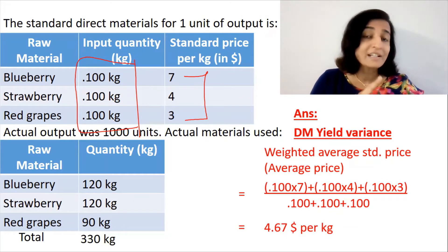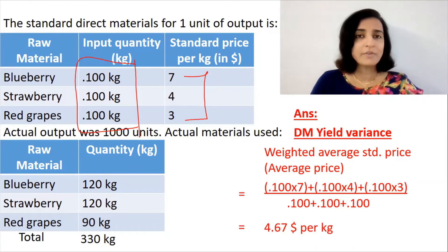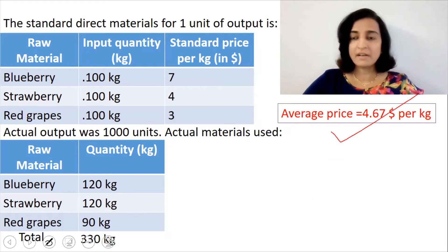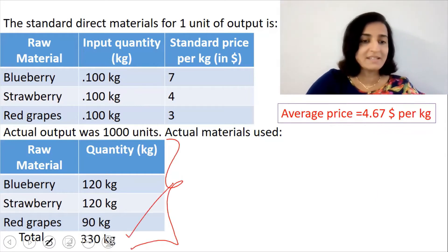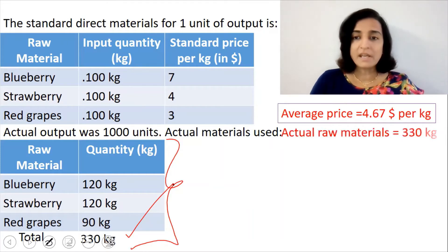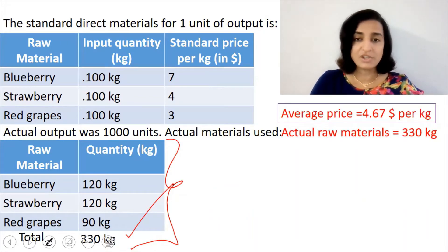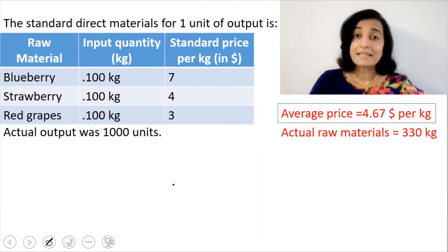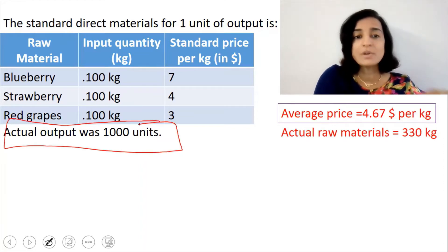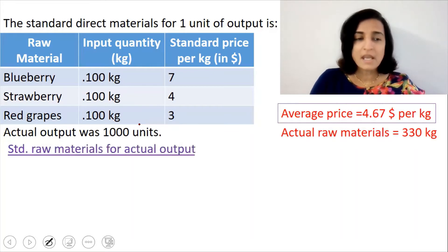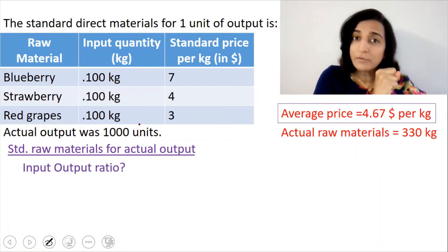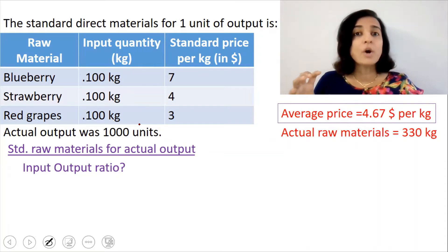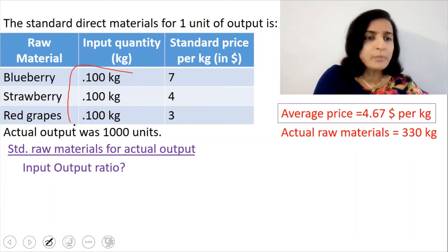Now we will make a comparison between the actual quantity of raw materials and the standard quantity of raw materials. The average price we just calculated is $4.67 per kg. The actual raw materials consumed total 330 kg. Now we have to find out the standard quantity of raw materials required for the actual output of 1,000 units. For this, we have to find out the input-output ratio from the question — what quantity of raw materials do you input to get a certain quantity of output?